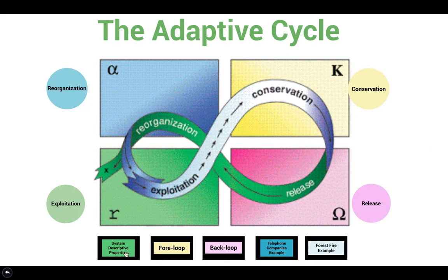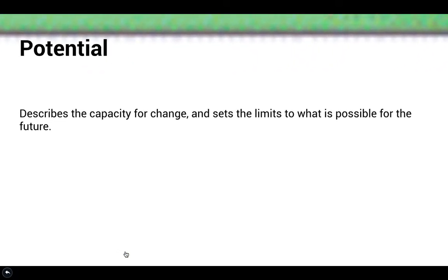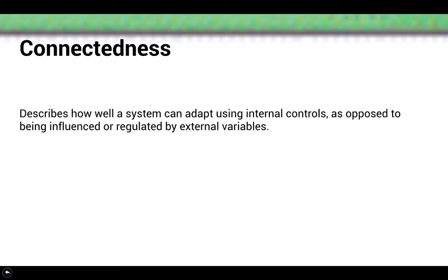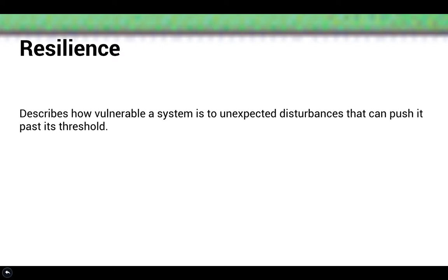The characteristics that we use to describe the state of each system are potential, connectedness, and resilience. Potential describes the capacity for future change and sets the limits as to what is possible. Connectedness describes how well a system can adapt by using its internal controls as opposed to being influenced or regulated by external variables. And finally, resilience describes how vulnerable a system is to unexpected disturbances that can push it past its threshold — in other words, it's the capacity of a system to tolerate disturbances without collapsing.